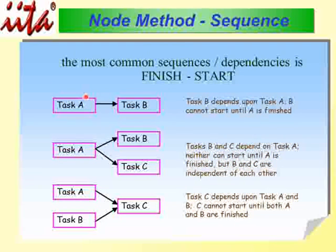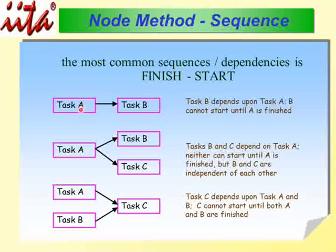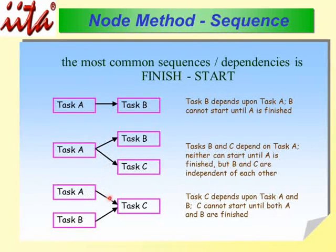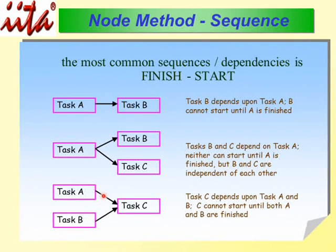There are many other scenarios under the node method, especially regarding Finish-to-Start. Task B depends on A — it is only when A finishes that B will start. Task B and Task C are both dependent and require the completion of Task A before either can start. Similarly, Task C can only start when both Task A and Task B are finished; if only Task A finishes, Task C will not start.